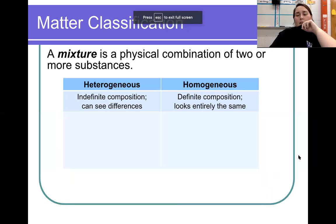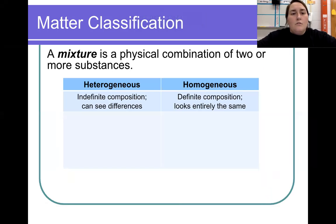Moving on with classification of matter: a mixture is a combination of two or more substances, like carbon dioxide with two oxygens and one carbon. There are two different types of mixtures. We can have heterogeneous, which is an indefinite composition with differences between substances.